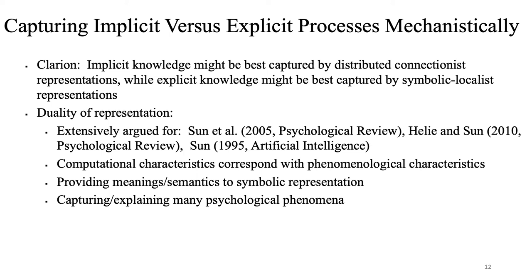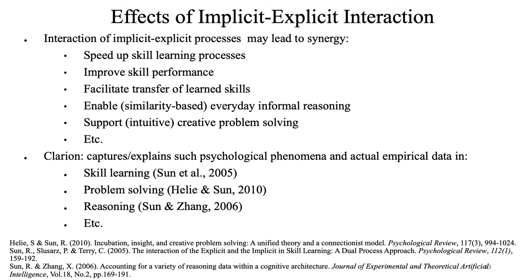Within Clarion, implicit knowledge is best captured by distributed connectionist representations, while explicit knowledge is best captured by symbolic or localist representations. This duality of representation has been extensively argued before. The computational characteristics of these two types of representation correspond well with the phenomenological characteristics of these two types of processes, for example in terms of accessibility or ease of access. Together, they also provide meanings or semantics to symbolic representations, grounding symbolic representations in lower-level representations, features, and micro-features. Together, they capture and explain many psychological phenomena.